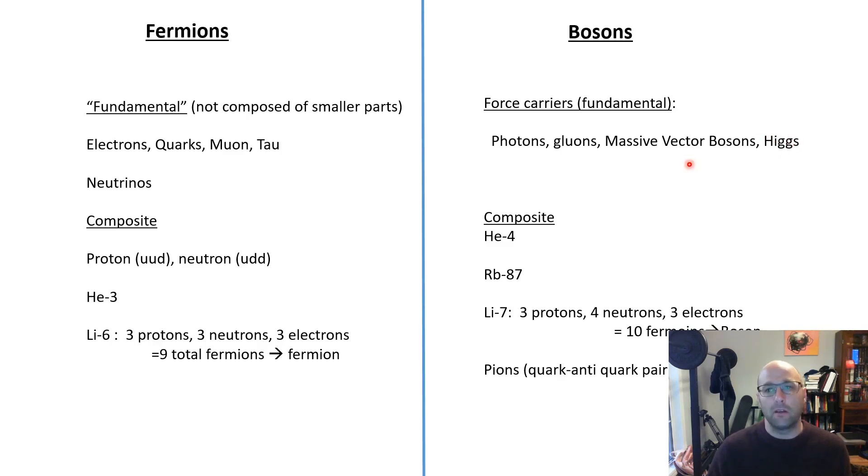Photons mediate electromagnetic force, gluons the strong force, the massive vector bosons are weak force, and then the Higgs causes a symmetry breaking that gives the massive vector bosons their mass. So those are all bosons. In composite particles, protons and neutrons are each made up of three quarks, so that makes them fermions. Helium-3 is a fermion, whereas helium-4 is a boson. Rubidium-87 is a really famous boson that was the element in which Bose-Einstein condensation was first demonstrated.